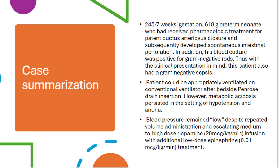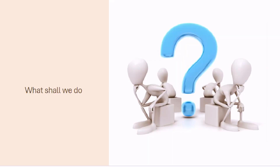So we have a 7-day-old preterm baby who was admitted for PDA treatment and now he developed NEC and sepsis. He then developed neonatal shock manifested as persistent hypotension, not responding to dopamine 20 micrograms and a low dose of epinephrine, metabolic acidosis, and anuria. What shall we do now?